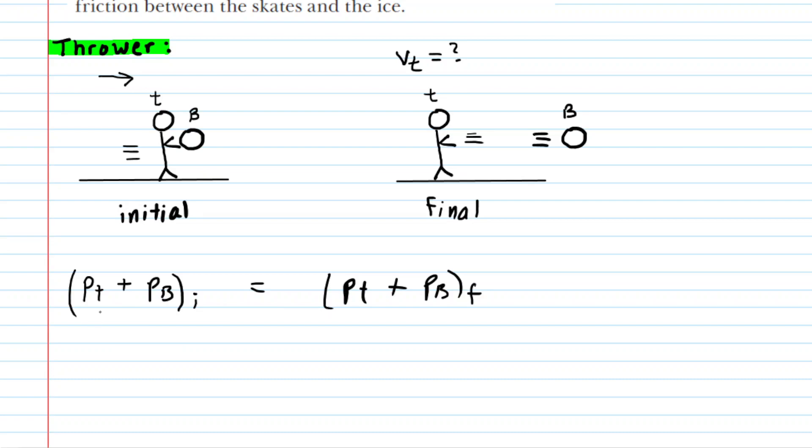To make this more calculationally useful we're going to expand the momentum expressions. For the thrower we have the mass of the thrower multiplied by the velocity of the thrower and then add that to the mass of the snowball times the velocity of the snowball. These are the initial conditions. We'll have the same expansion on the right side except under final conditions.